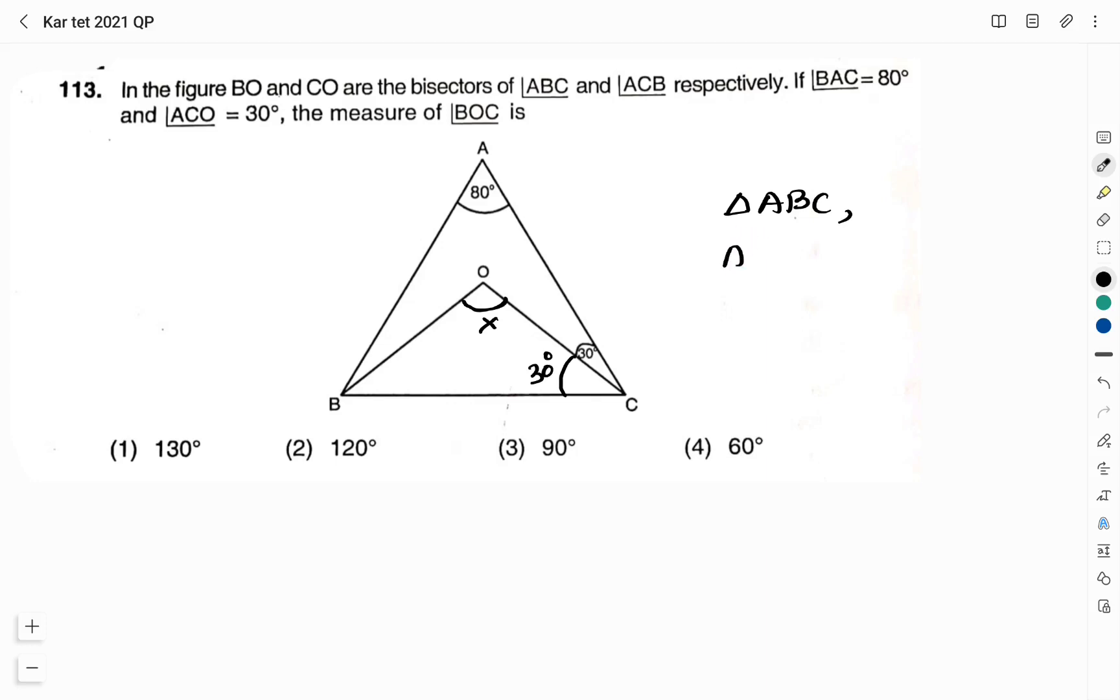In triangle ABC, sum of the angles, angle A plus angle B plus angle C, we know it is 180 degree. Angle A is given, it is 80 degree. Angle B is what we have to find. Angle C means the overall angle, it is angle ACB, that is 30 plus 30, 60 degree which is equal to 180. Angle B is equal to 180 degree minus 80 degree plus 60 degree. This is 180 degree minus 140 degree and angle B is equal to 40 degree.